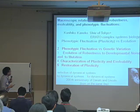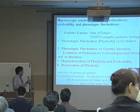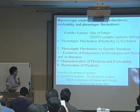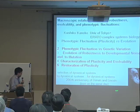Thank you very much. Today I'm going to talk about fluctuation versus evolution. This is the menu: fluctuation versus evolution, fluctuation by genetic change and evolution of robustness, characterization of plasticity, and restoration of plasticity. Theoretically speaking, it's a story about selection of dynamical systems, by dynamical systems, for dynamical systems.